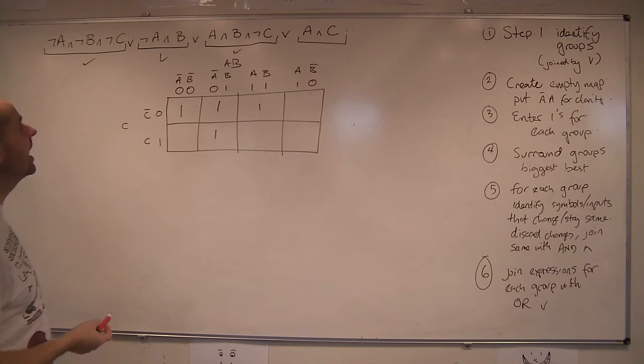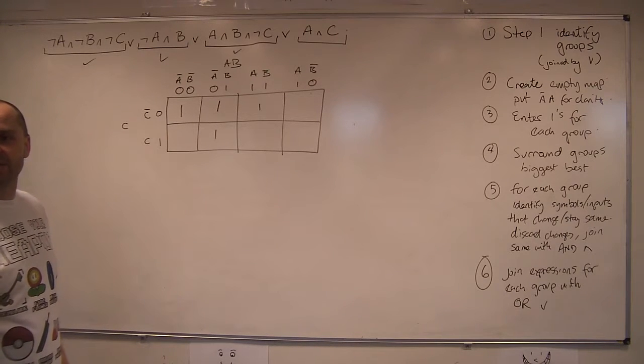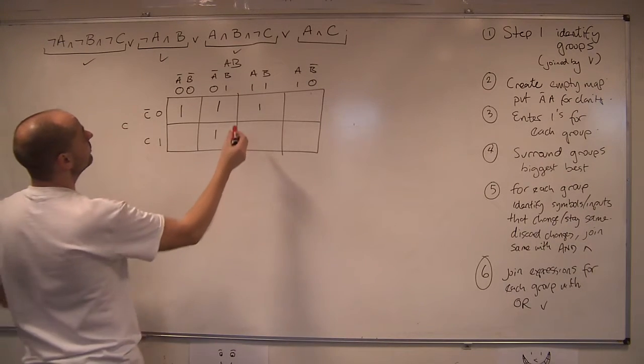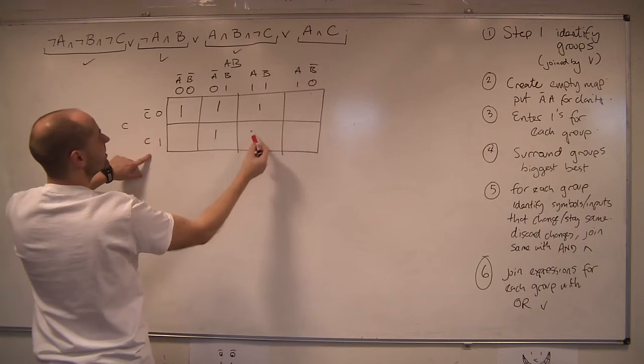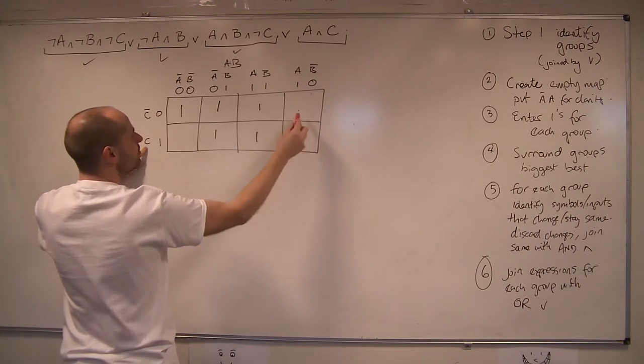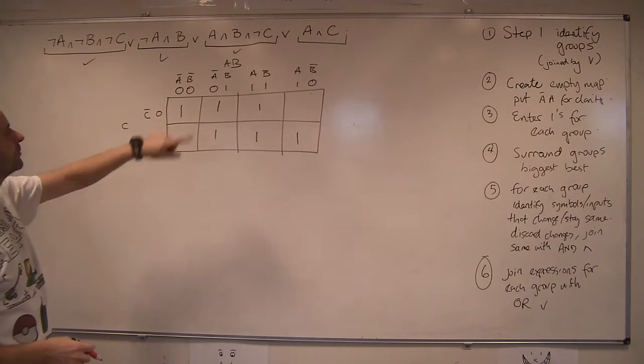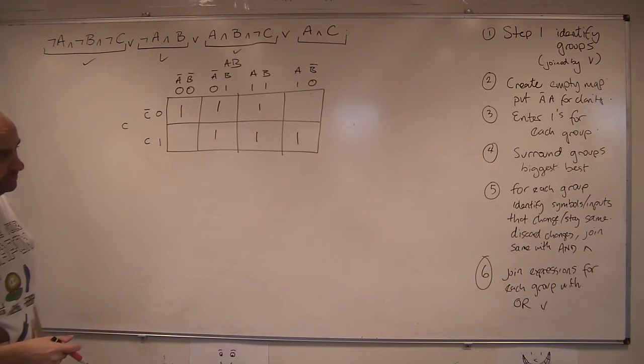Right. And then the final one, A and C. B is not in this part of the expression. So B is irrelevant. Okay. So I'm looking for an A. There's an A. There's C. Is there another A? There is another A. We don't care what the B is. And that is still on the C row. So that is step three. So I've done my map.